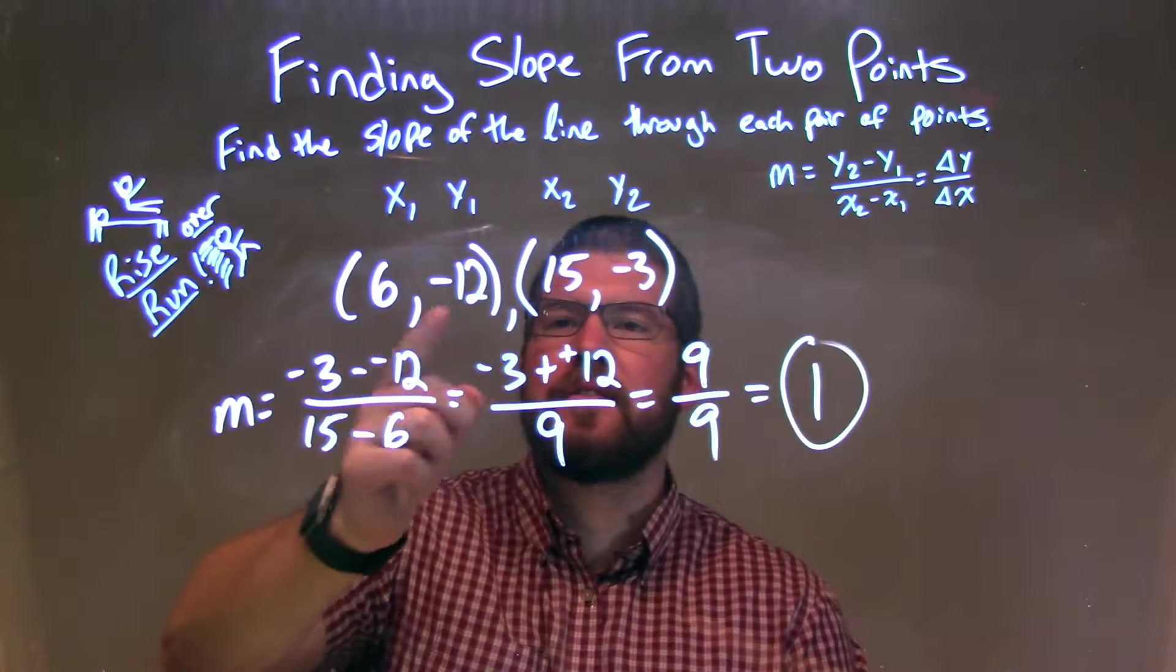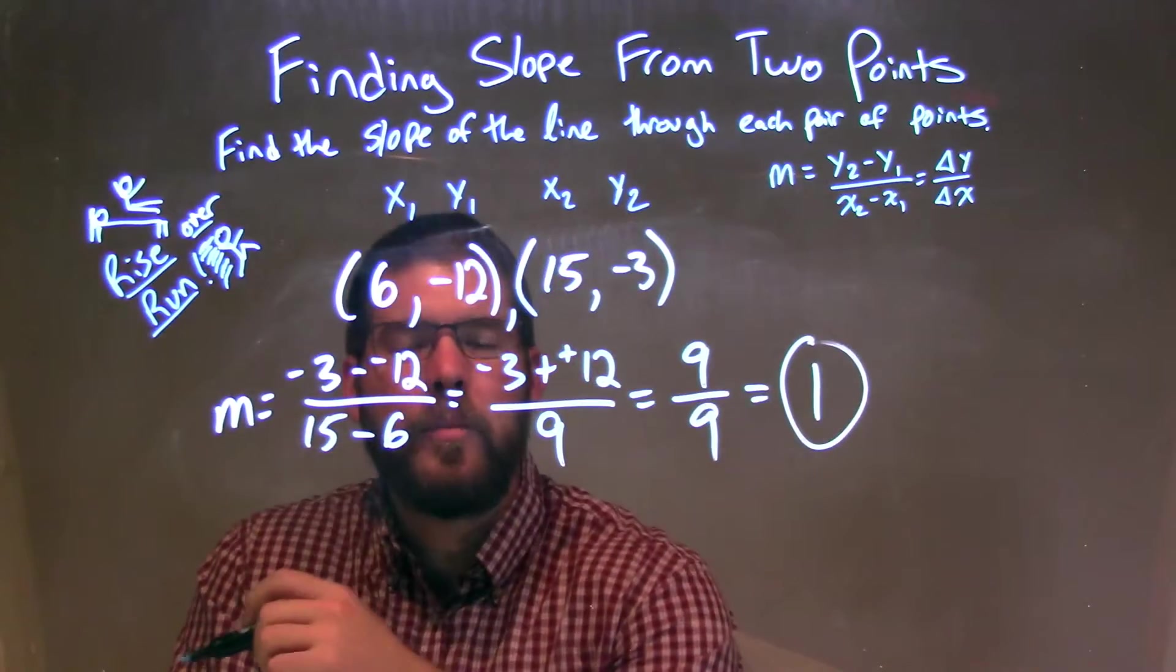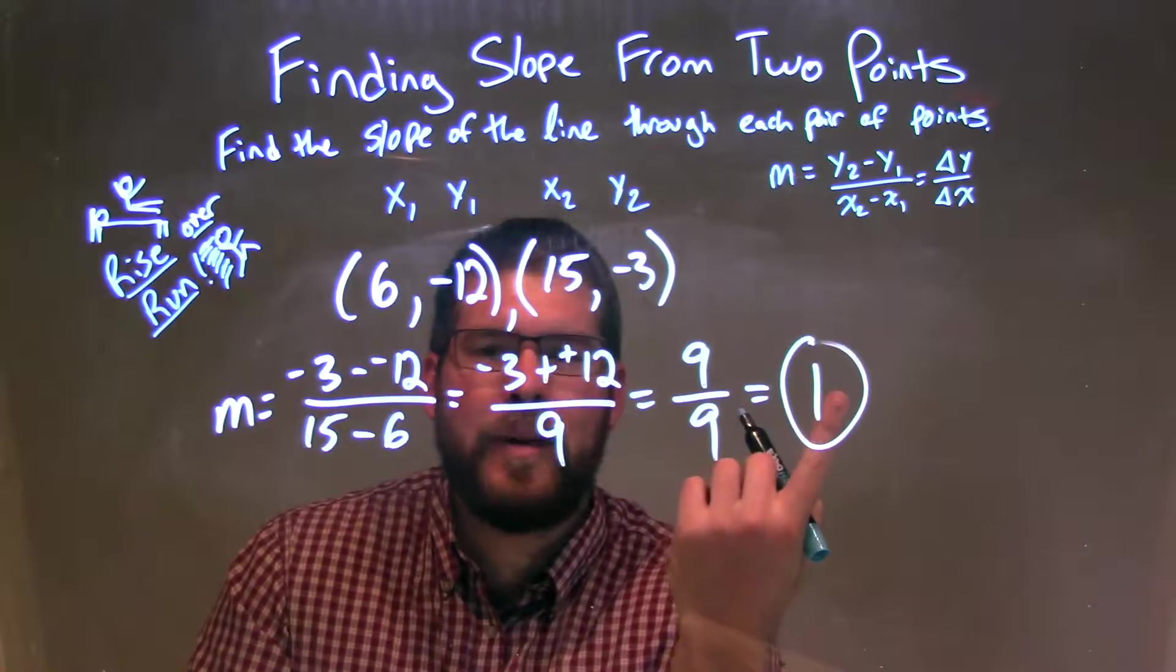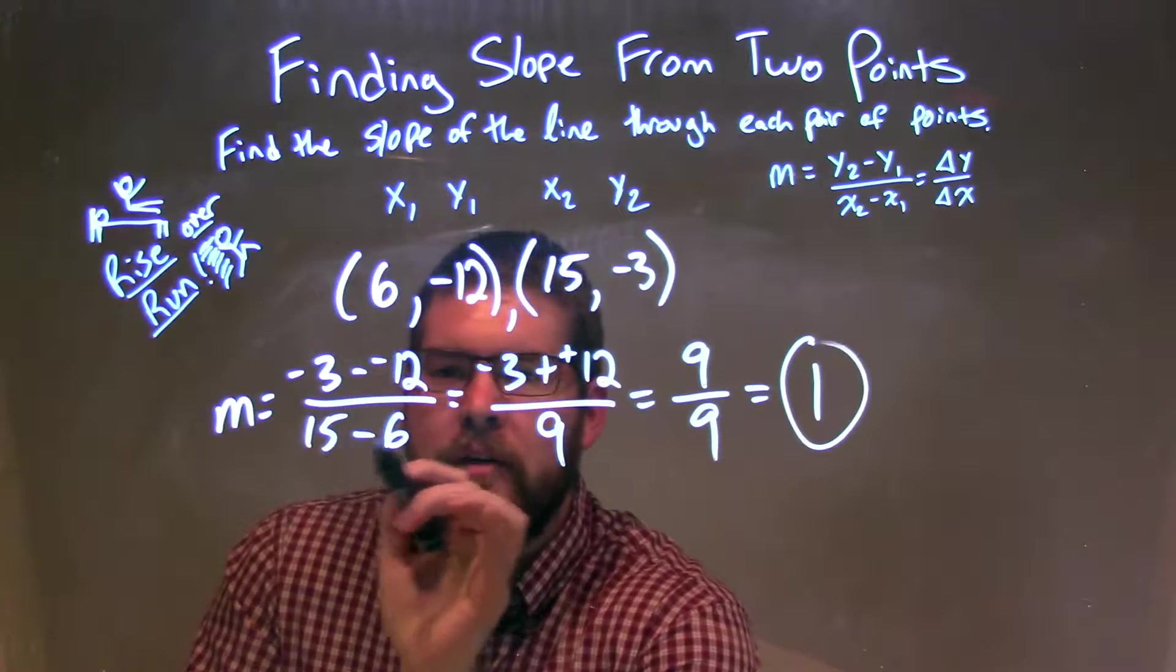So as a recap, I'm given my two points, 6, negative 12, and 15, negative 3. I had to find the slope between these two points, so I applied the slope formula with my change of y over change of x, and I have y2 minus y1 over x2 minus x1.